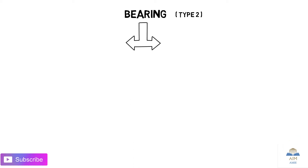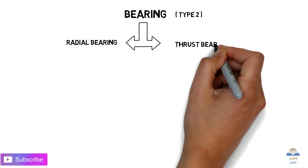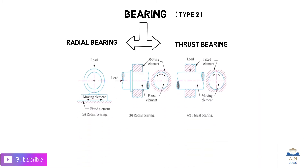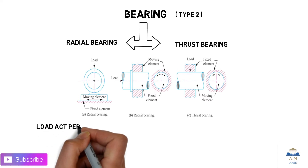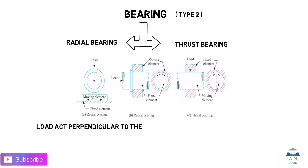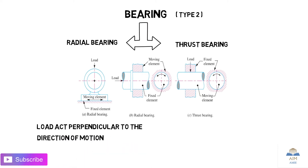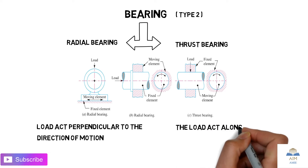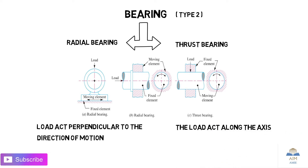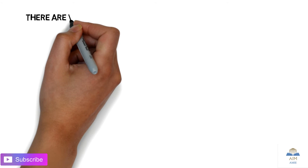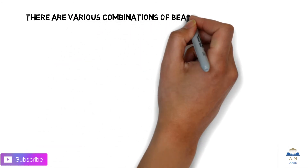The Type 2 classification is the radial bearing versus the thrust bearing. In a radial bearing, the load acts perpendicular to the direction of rotation or motion. In the case of a thrust bearing, the load acts along the axis of rotation. This is the major difference between the thrust and the radial bearing.